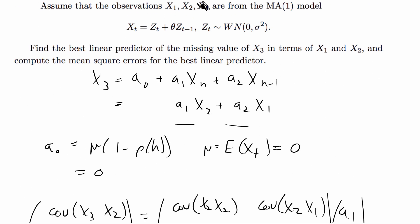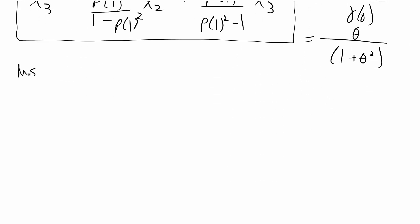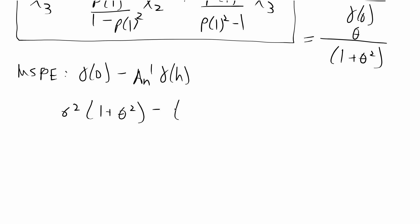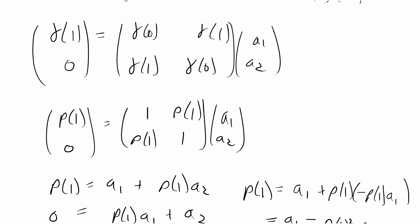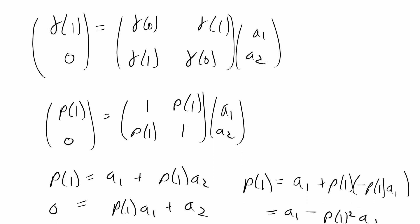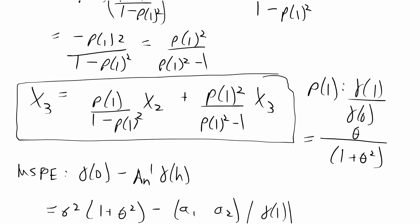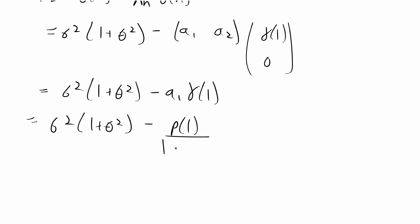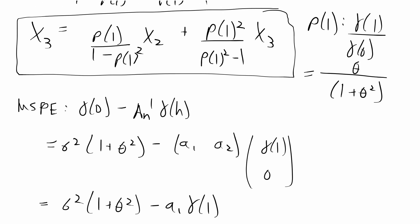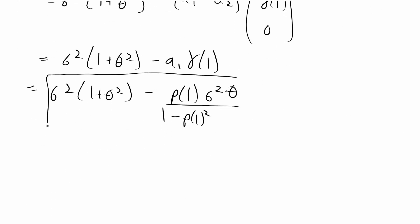The second part asks to compute the mean squared predictive error. The formula is gamma_0 minus A_n^T times gamma_h. Gamma_0 = sigma^2*(1 + theta^2). The vector A_n is [a1, a2] and gamma_h is [gamma_1, 0]. Multiplying gives a1*gamma_1. So the mean squared predictive error equals sigma^2*(1 + theta^2) minus [rho_1/(1 - rho_1^2)]*sigma^2*theta. That is the final answer for the mean squared predictive error.